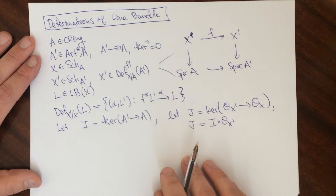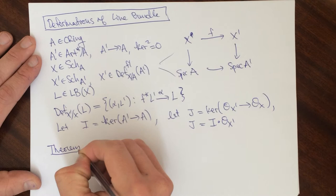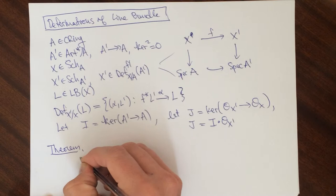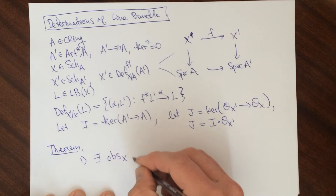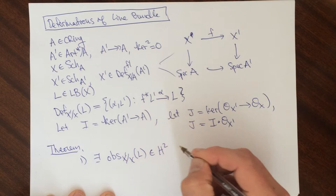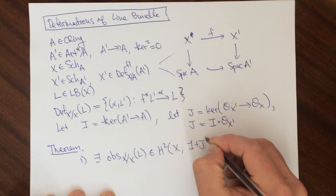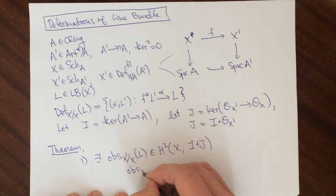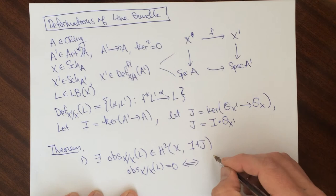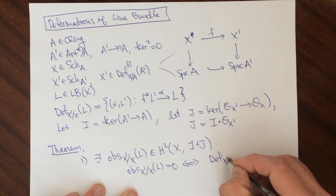So now the theorem. So there exists a very special class called the obstruction to lifting that lives in H^2 of X and then one plus J. And it has the property that this class vanishes if and only if the deformations are not empty. So the deformations of the line bundle to X prime.